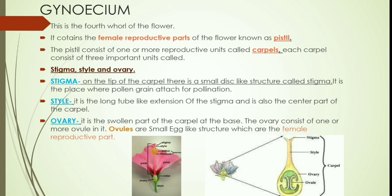The third part is the ovary — you can see it labeled in the diagram. It is the swollen, round part of the carpel at the base. The ovary consists of one or more ovules inside it. Ovules are small egg-like structures which are the female reproductive parts. So these are the three parts of the carpel: stigma, style, and ovary. Together they form the gynoecium, which is the fourth and last whorl of the flower — the female part.